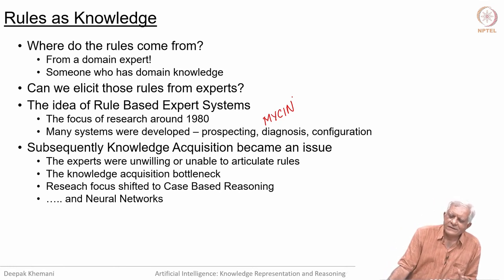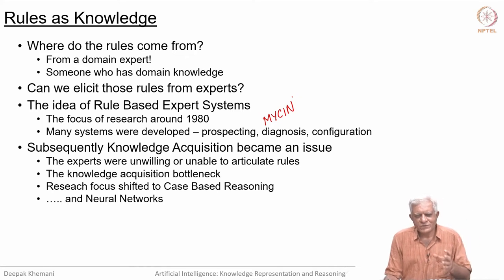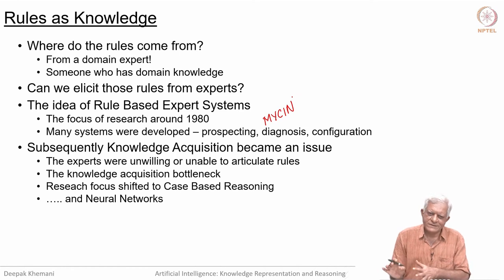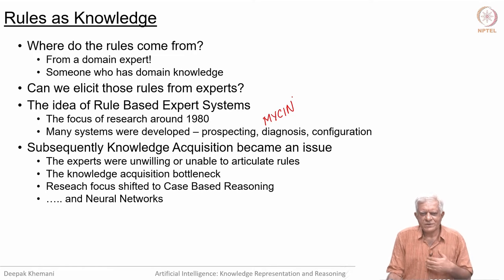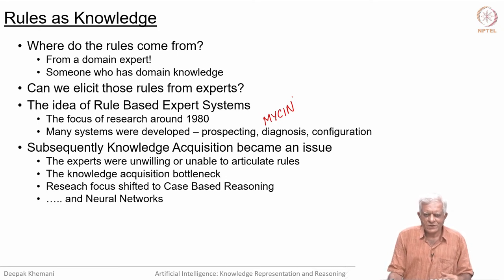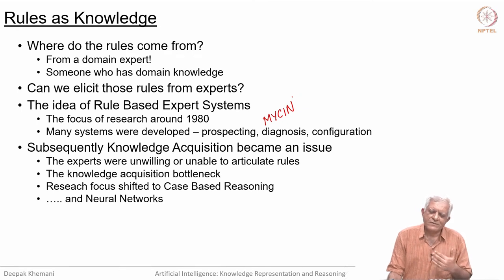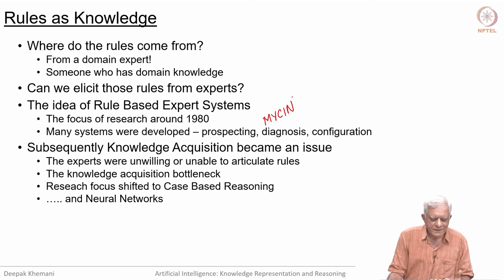After the rule-based expert system idea came forward, people discovered that conceptually it is a great idea—you go to a human expert, elicit their knowledge, put it in a system, and you have an expert system. But it turned out that experts were either unwilling or unable to articulate their knowledge in the form of rules. The community developed many protocols for knowledge extraction, recording interviews and trying to extract rules from them. But it was not easy, and it became a bottleneck known as the knowledge acquisition bottleneck.